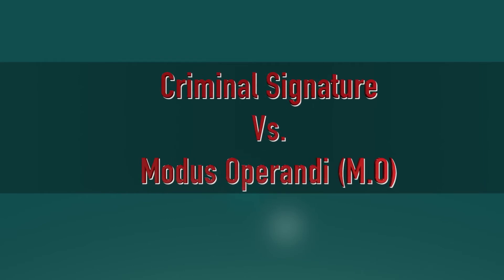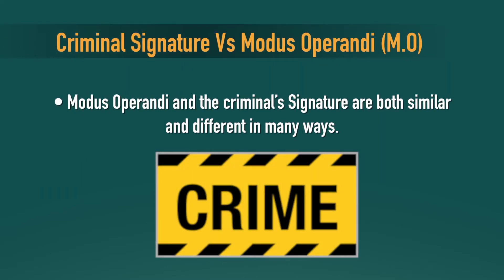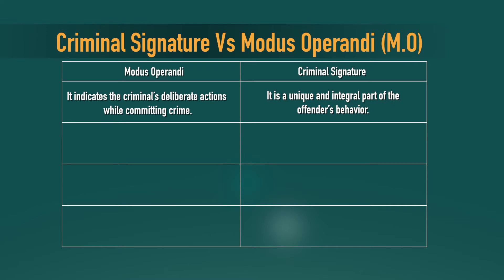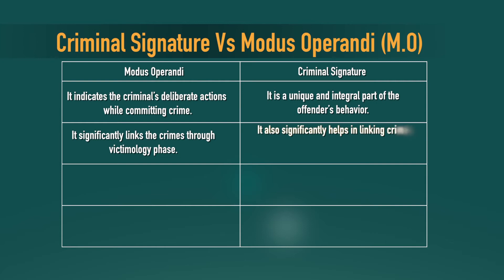Now let's compare criminal signature with the modus operandi. Modus operandi and criminal signature are both similar but differ in certain aspects. Modus operandi indicates the criminal's deliberate action while committing a crime, whereas the criminal signature is a unique and integral part of the offender's behavior. Modus operandi significantly links crimes through victimology, whereas the criminal signature significantly helps in linking crimes based on personal expression or the ritual fantasies of the offender.